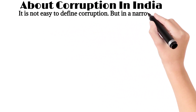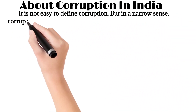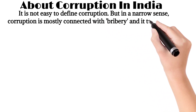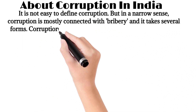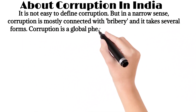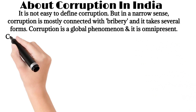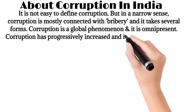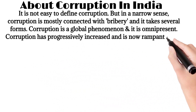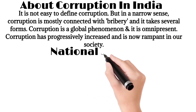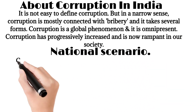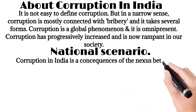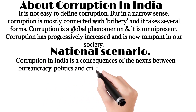It is not easy to define corruption, but in a narrow sense, corruption is mostly connected with bribery and it takes several forms. Corruption is a global phenomenon and it is omnipresent. Corruption has progressively increased and is now rampant in our society. Corruption in India is a consequence of the nexus between bureaucracy, politics, and criminals.